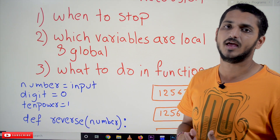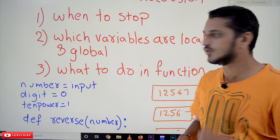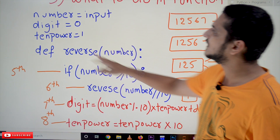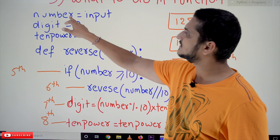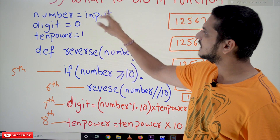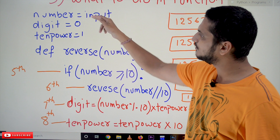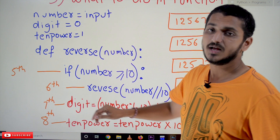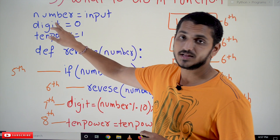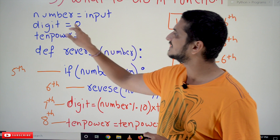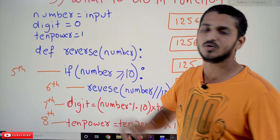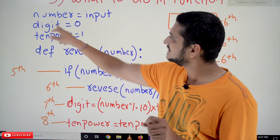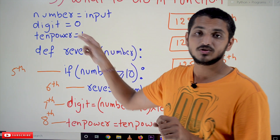The third point to remember when doing recursion programs is: what to do inside the function — that is what we have to identify. Coming to our example, we take a variable 'number' from the input — 12567 is taken into this variable. We also take two global variables: digit equals 0 and 10_power equals 1.